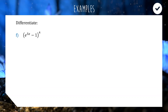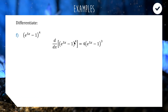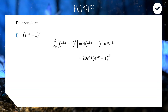Next we differentiate (e to the 5x minus 1) to the power of 4. We use the chain rule: bring the 4 down the front, reduce the power by 1 to get a power of 3, keep the bracket term the same, then multiply by the derivative of what's inside the brackets. The derivative of e to the 5x is 5e to the 5x, and the derivative of the constant 1 is zero. Combining: 4 times 5e to the 5x times (e to the 5x minus 1) cubed, which simplifies to 20e to the 5x times (e to the 5x minus 1) cubed.